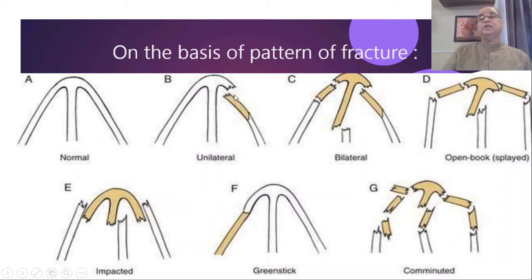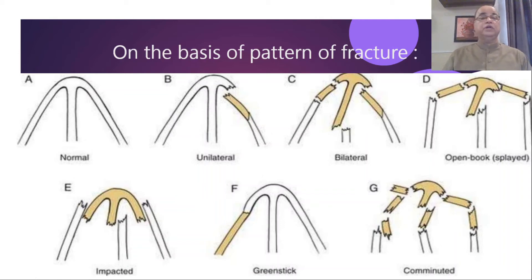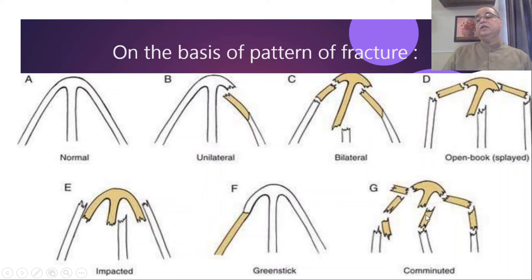Diagrammatically: normal, then unilateral fracture of one nasal bone, then bilateral fracture with septal fracture, then open book where the nasal septum is pushed inwards and the nasal bones are splayed out, then an impacted portion and a greenstick fracture with no external deformity but a hairline fracture line, and finally the comminuted type which may be associated with skin lacerations over the external nose.